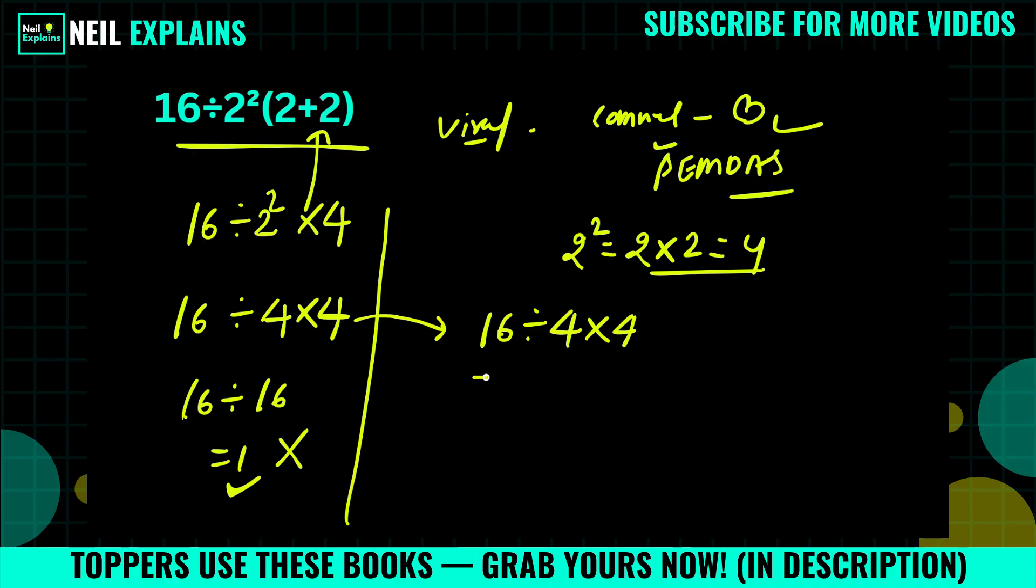As we know, PEMDAS have a division and multiplication of the same priority, and in that case, from left to right we have to solve. 16 divided by 4, that is equal to 4 into 4. Now 4 into 4, that is 16.